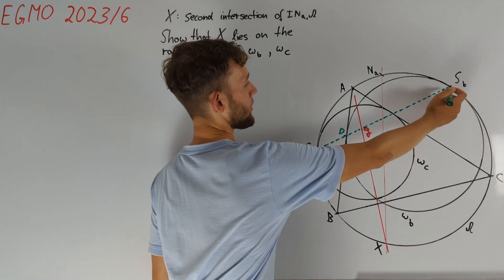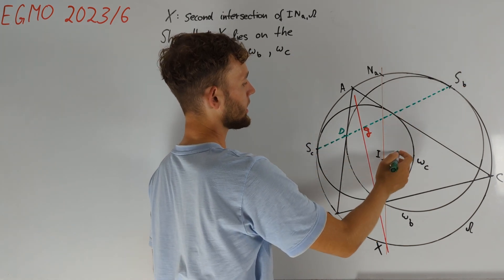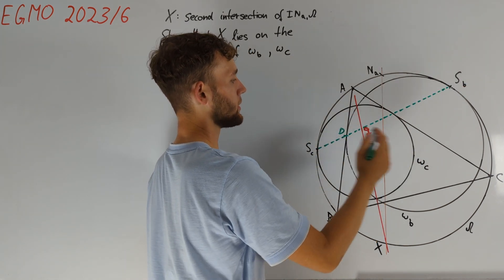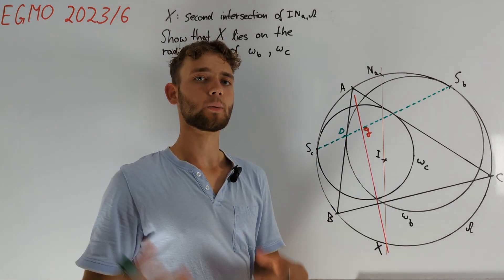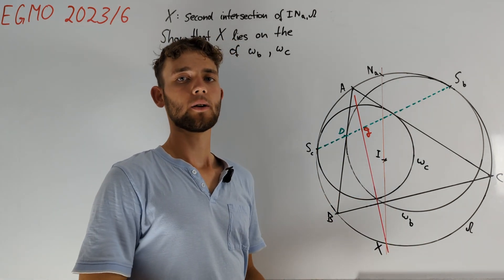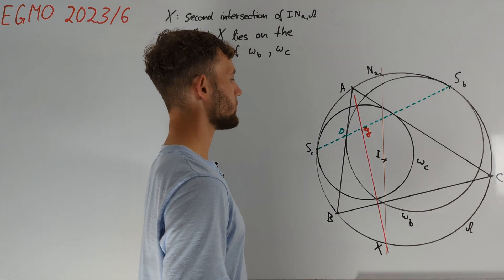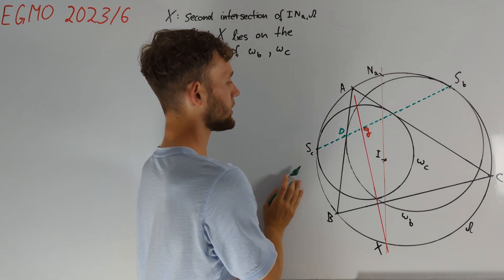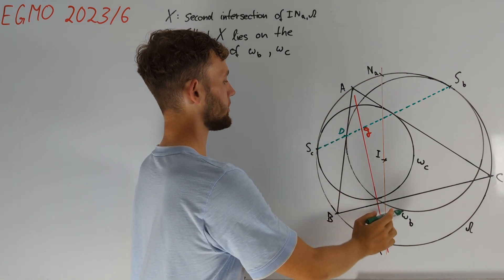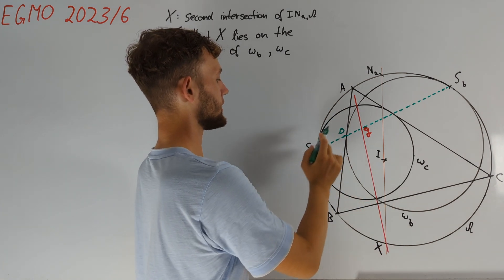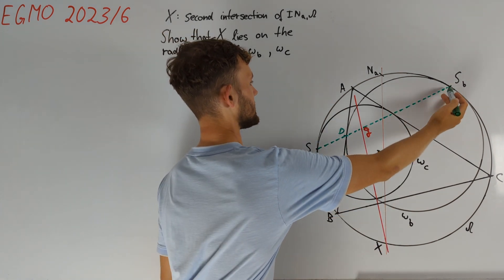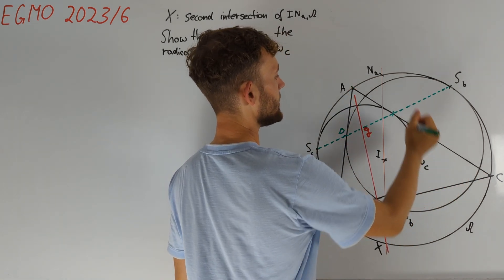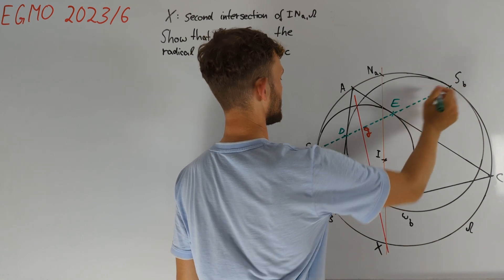By intersecting the line through SB and the midpoint of omega with the perpendicular on AB through D, we indeed get the center of omega_B, and so we were indeed successful with our construction. Moreover, we figured out a useful fact about our configuration. Namely, we know that the tangency point of AB at omega_B, which we call D, lies on line SB, SC. By symmetry, the tangency point E of AC at omega_C also lies on line SB, SC.